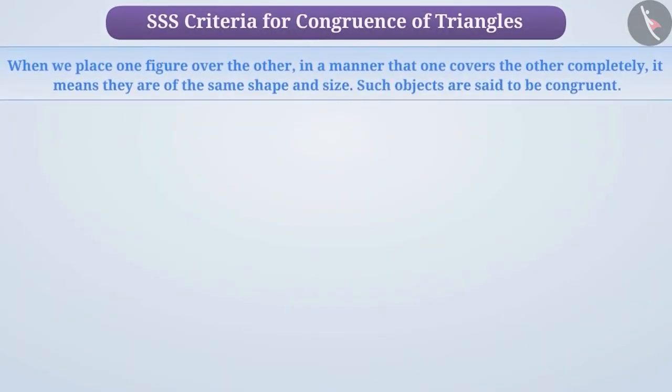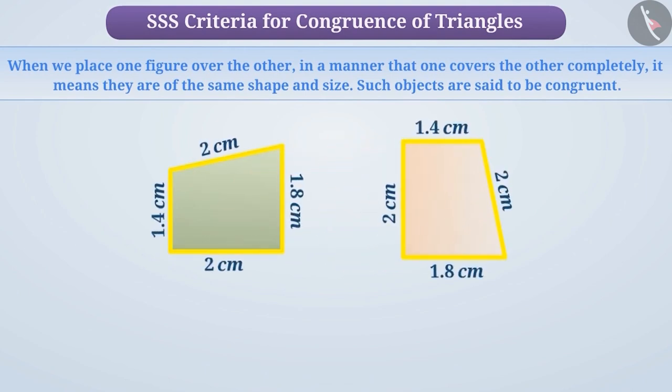You know that when we place one figure over the other in a manner that one covers the other completely, it means they are of the same shape and size. Such objects are said to be congruent.